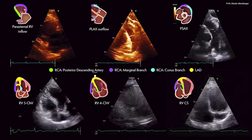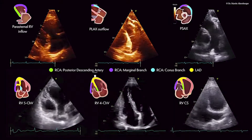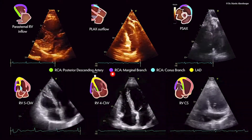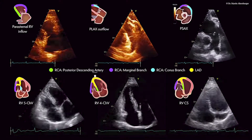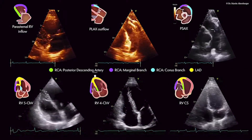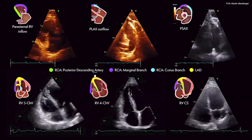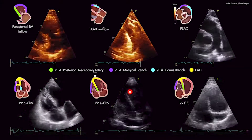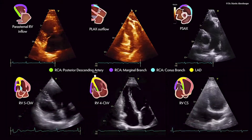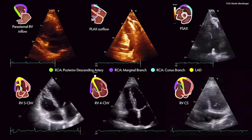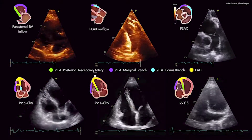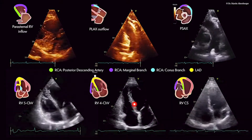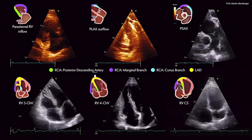If we go to the four-chamber view, we do see wall motion abnormalities. This is most likely supplied by the marginal branch of the right coronary artery. The free lateral wall seen here is the territory of the LAD again, and the posterior descending artery of the right coronary artery is supplying in the four-chamber view the really basal parts of the interventricular septum.